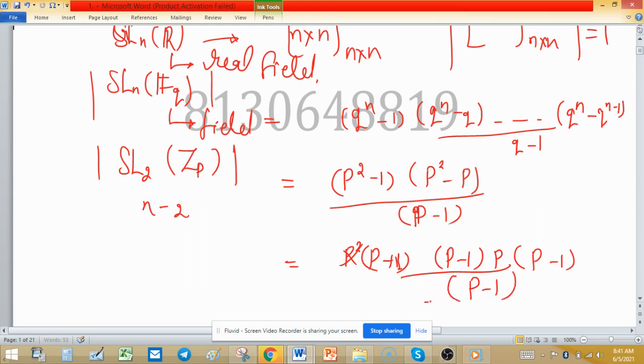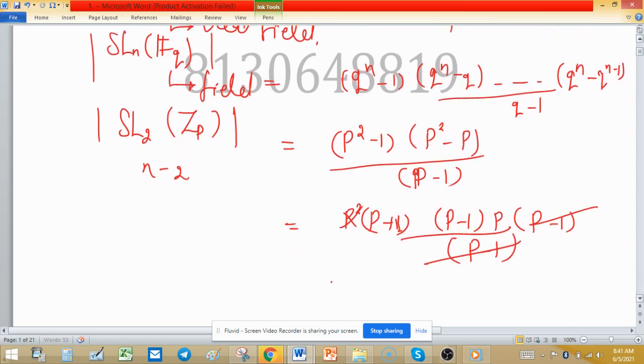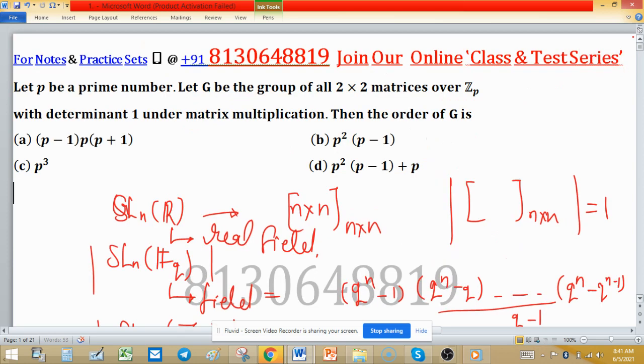Take p as common in the second bracket, then (p-1) divided by (p-1). So this one cancels out. We have (p-1) times p times (p+1).